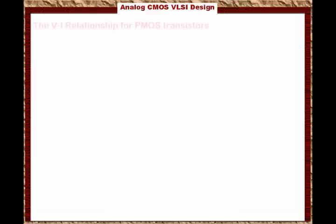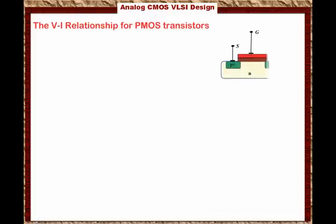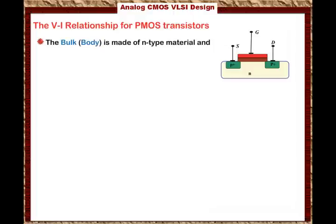We are ready for the VI relationship for the PMOS transistor. Here is the 2D layout for the PMOS transistor. Note that the bulk or the body is made of N-type material, and it must be connected to the highest voltage in the circuit. In CMOS technology, we develop the NMOS and PMOS transistors on the same wafer, and we make sure that the body is connected to the highest voltage in the circuit.